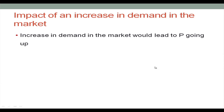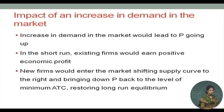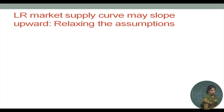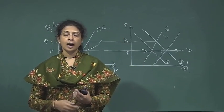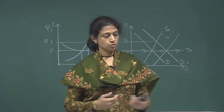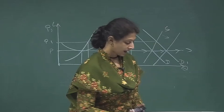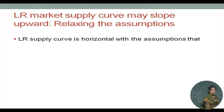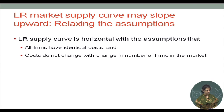To summarize: an increase in demand in the market would lead to P going up in the short run; existing firms would earn positive economic profit; new firms would enter the market, shifting the supply curve to the right and bringing P back to the level of minimum average total cost, restoring long run equilibrium. Now what happens if we relax the assumptions that the cost structure for all firms is exactly the same and costs do not change when firms enter or exit the market? What if we relax these assumptions — what happens to the long run market supply curve? We will see that it can actually slope upward.